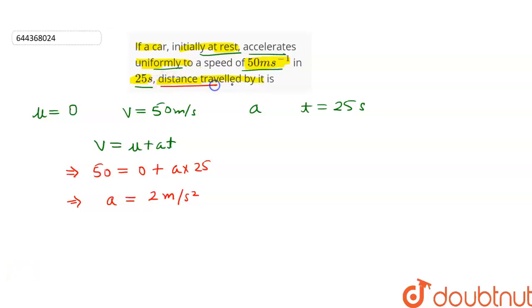We have to calculate the distance travelled by the car. Let the distance travelled be equal to s. It will be equal to ut plus half at squared. Let's substitute the values in this equation.